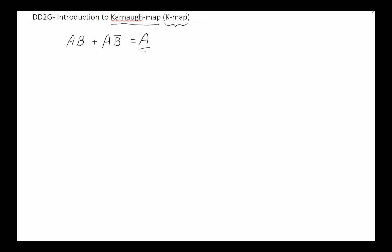Before we go too far, we want to introduce the concept of how to organize a function in a map that allows us to see all the places where a variable and its complement appear together, so we can eliminate it. Let's start with the simplest function we can have — one with two variables, A and B.